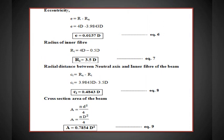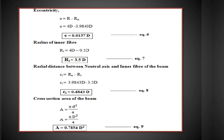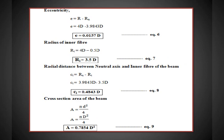Radial distance from neutral axis to inner fiber: Ci = Rn − Ri = 3.9843D − 3.5D = 0.4843D — equation 8. Cross-section area: A = pi × D² / 4 = 0.7854D² — equation 9.